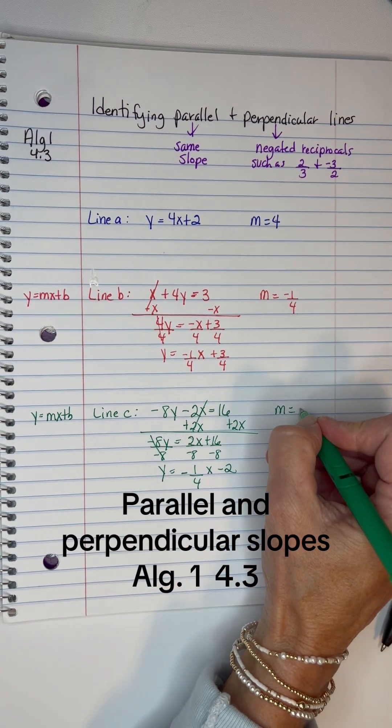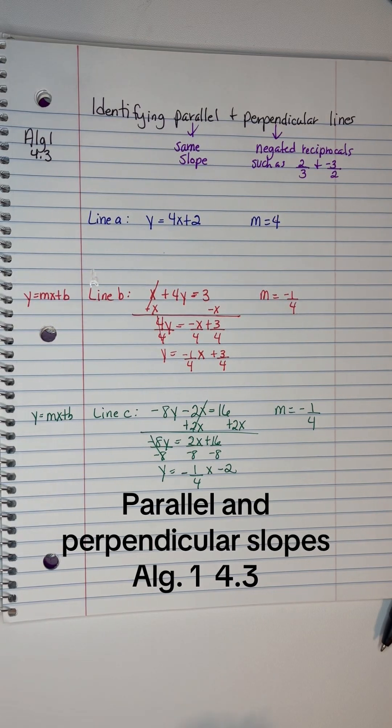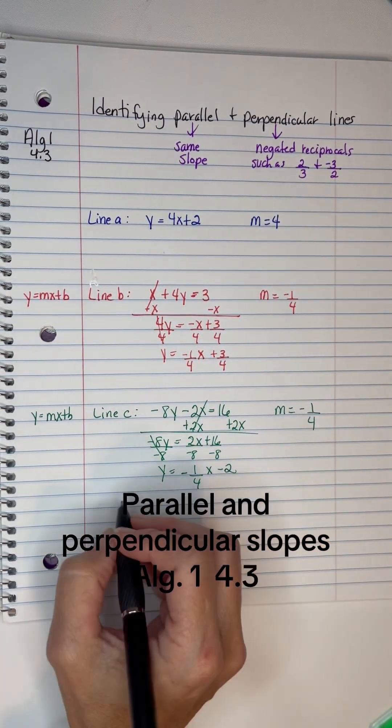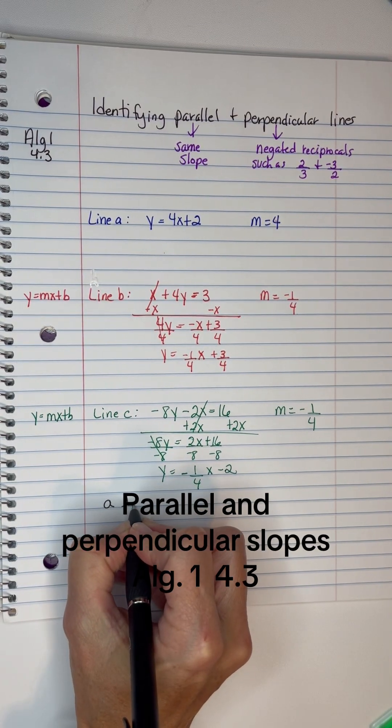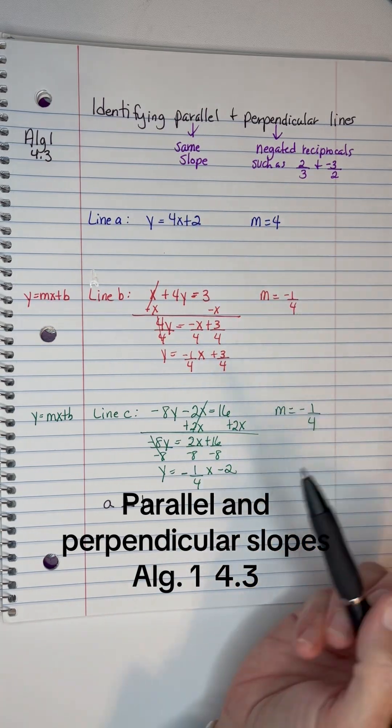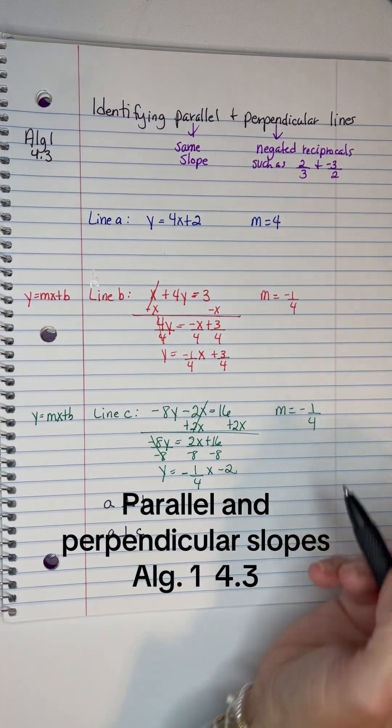So my slope here is -1/4 as well. So what I know is that A and B are perpendicular, so I'm going to put A perpendicular to B. And A is also perpendicular to C, because they're negated reciprocals.